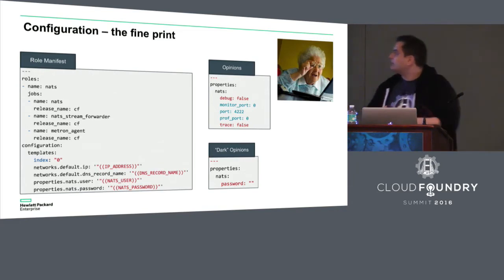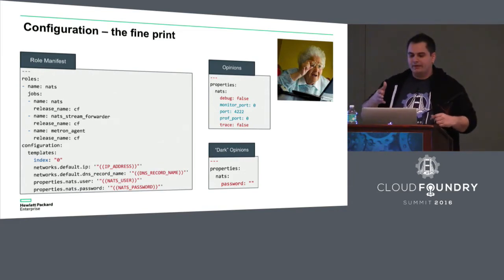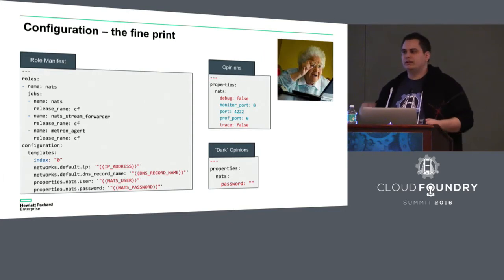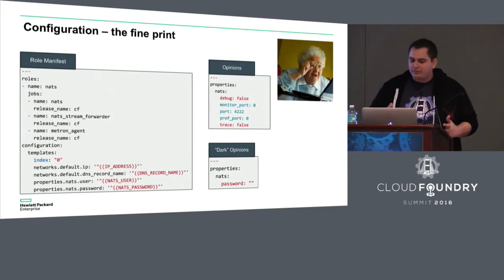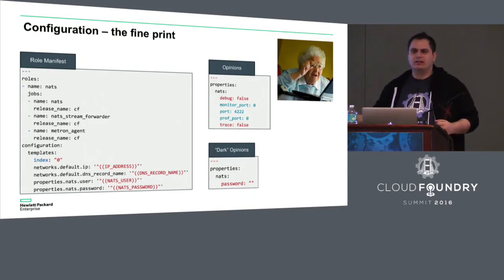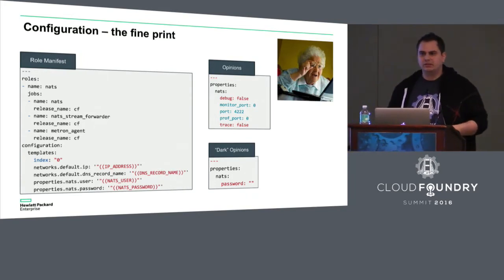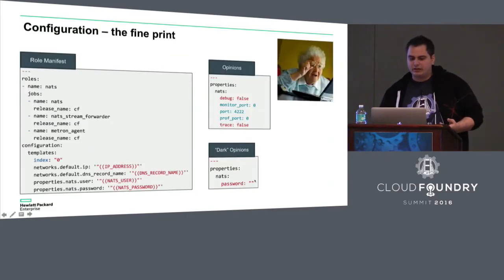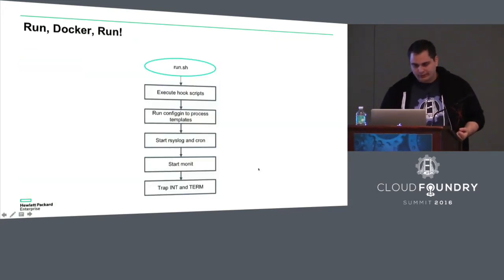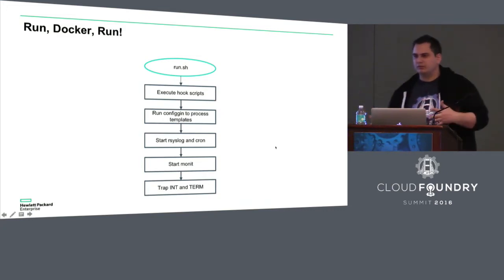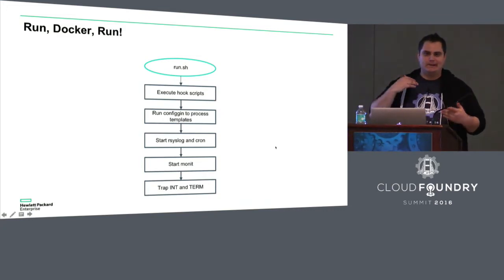On the right, we have opinions. At the top, it's basically a BOSH deployment manifest with just the properties section — those are configuration defaults that will be baked into the images, things that the user won't be able to change. They're basically your opinions of how the container should run. Then we have dark opinions, and this is something to make security guys happy — anything that's in there won't be allowed to have a default. There we enumerate all the secrets in the system so that you could never get one of those secrets to have a default baked into the image.